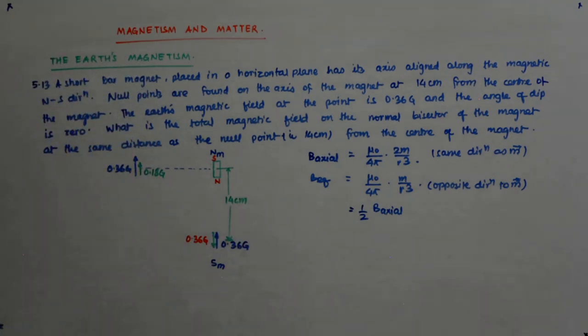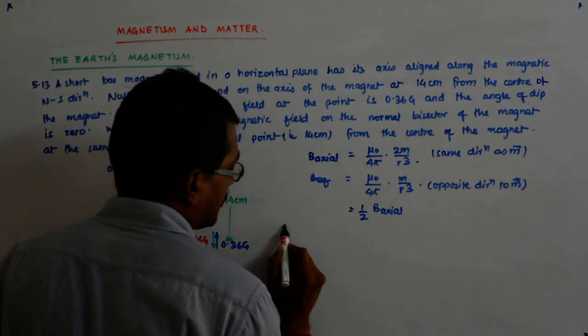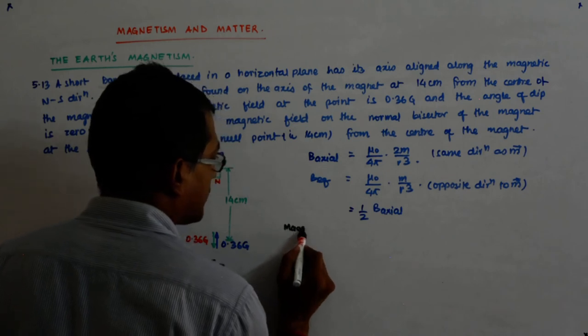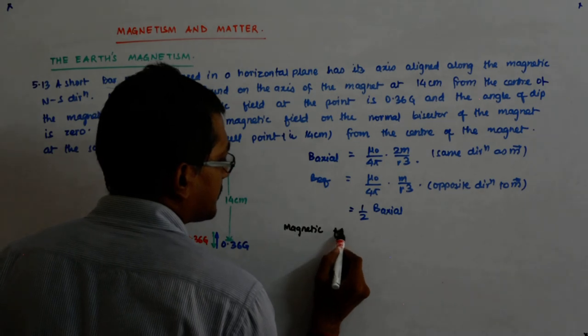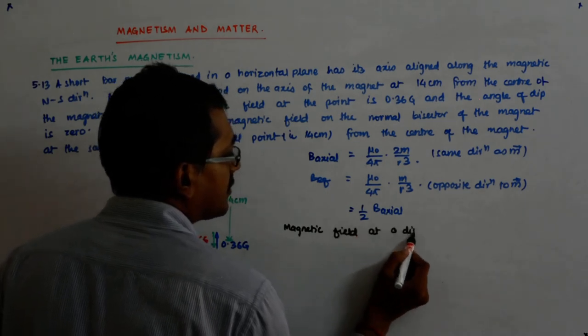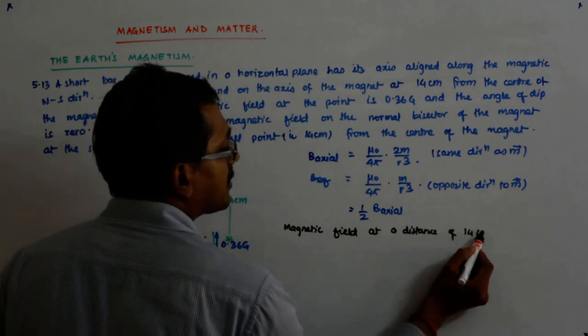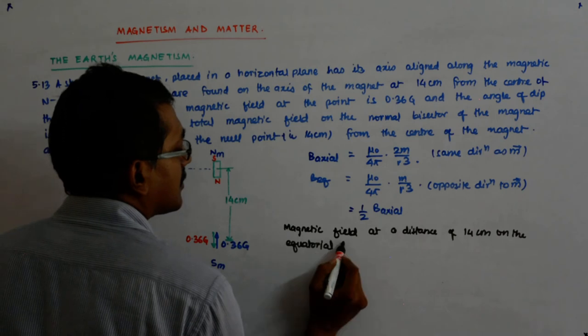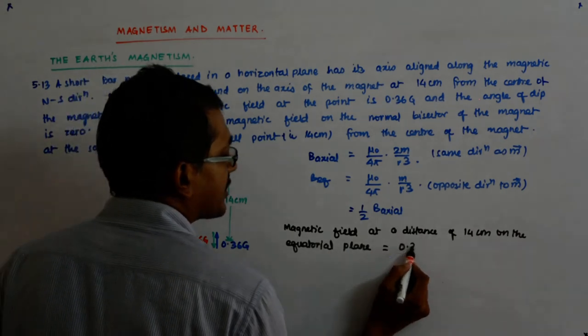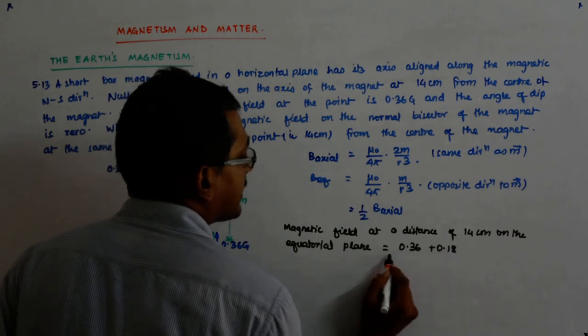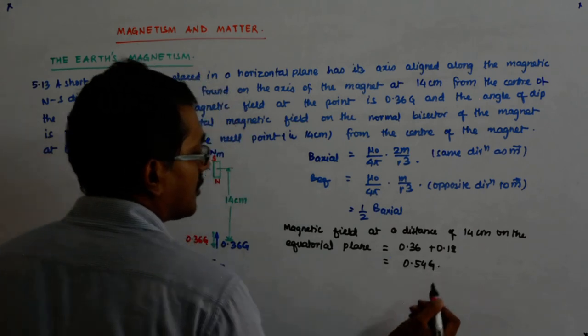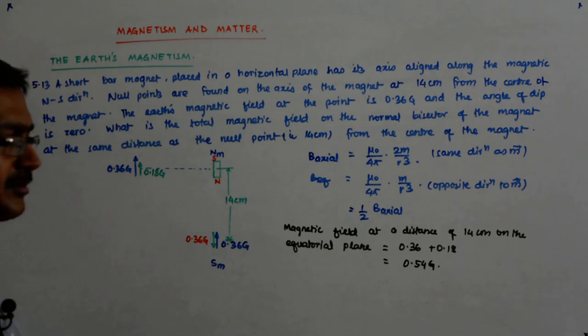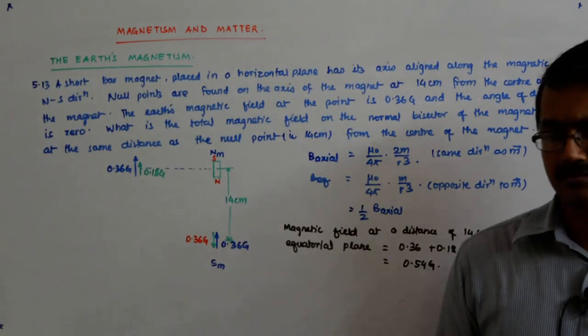So what is the field here? 0.54 Gauss. Why? Because both the vectors are in the same direction. Yes, they are adding. So the magnetic field at a distance of 14 centimeter on the equatorial plane is 0.54 Gauss.